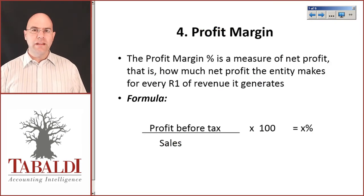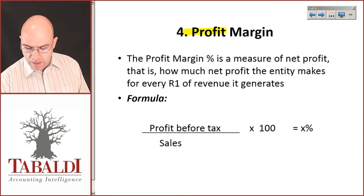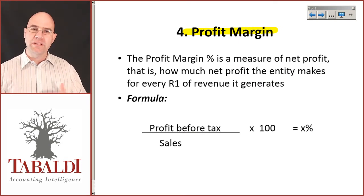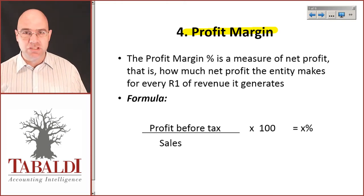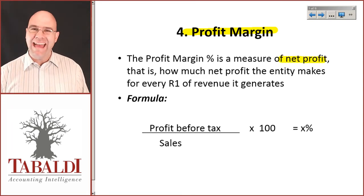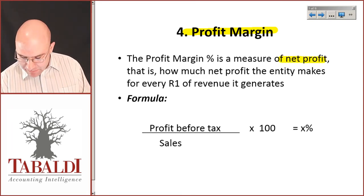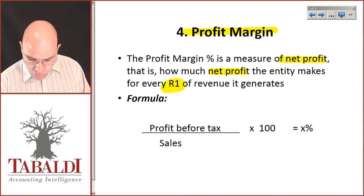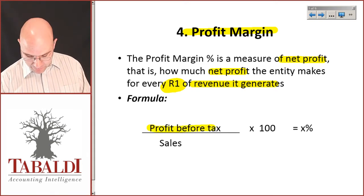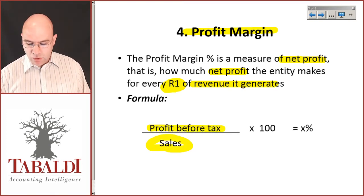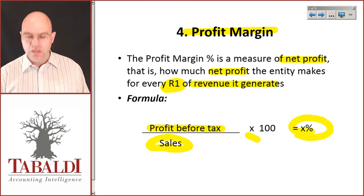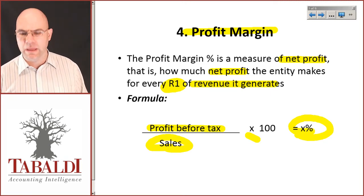Then I need to go one step further and look at my profit margin percentage. This doesn't just take into account cost of sales, but all other expenses such as administration, distribution expenses, etc. This is a measure of net profit and tells me how much net profit the entity makes for every one rand of revenue it generates. The formula is profit before tax divided by sales, multiplied by 100 to get a percentage. This used to often be called the net profit percentage.